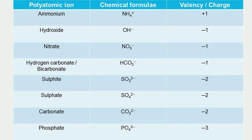These are some of the polyatomic ions. Ammonium ion (NH4+) carries 1 unit positive charge, so its valency is +1. Hydroxide ion (OH−) has valency −1. Nitrate ion (NO3−) has valency −1. Bicarbonate ion (HCO3−) has valency −1. Sulfite ion (SO3²−) has valency −2. Sulfate ion (SO4²−) has valency −2. Carbonate ion (CO3²−) has valency −2. Phosphate ion (PO4³−) carries 3 units negative charge, so its valency is −3.